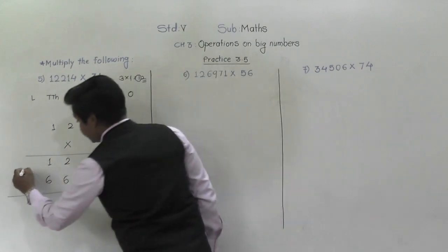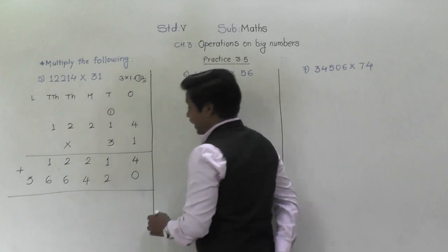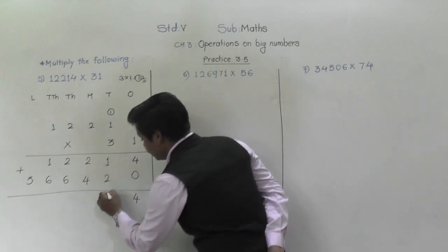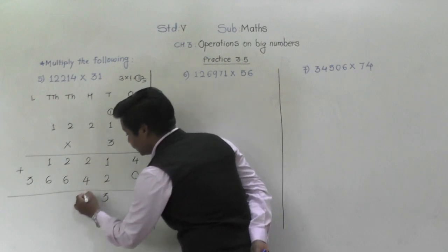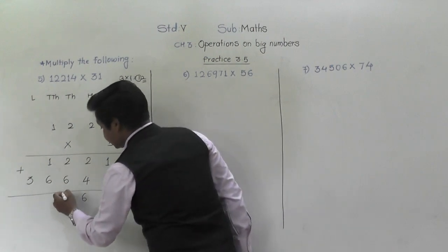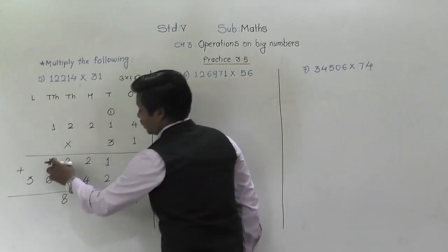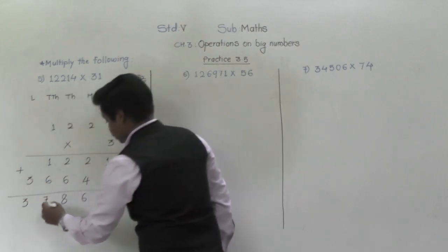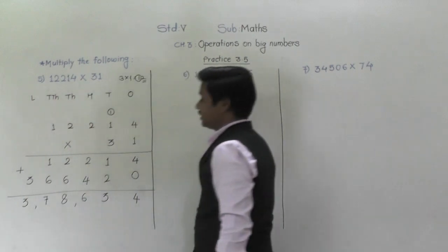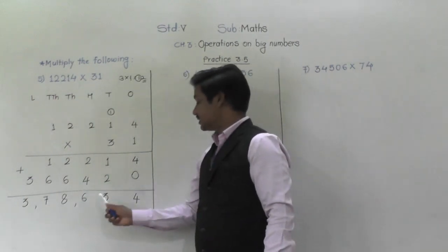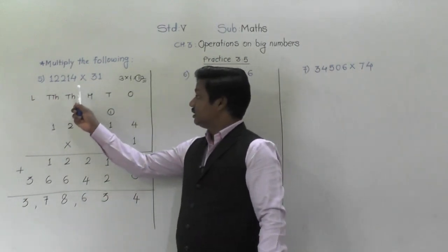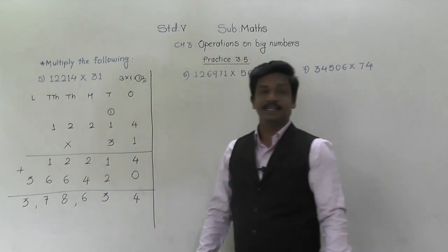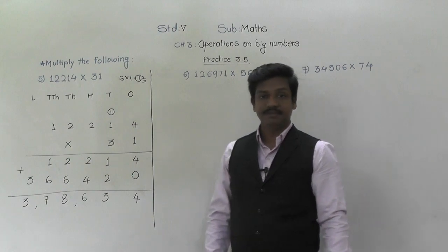Now we need to add them. Four plus zero is four. One plus two is three. Two plus four is six. Two plus six is eight. One plus six is seven. And here three. So the answer is three lakh seventy-eight thousand six hundred thirty-four — 3,78,634. The product in this multiplication is 3,78,634.